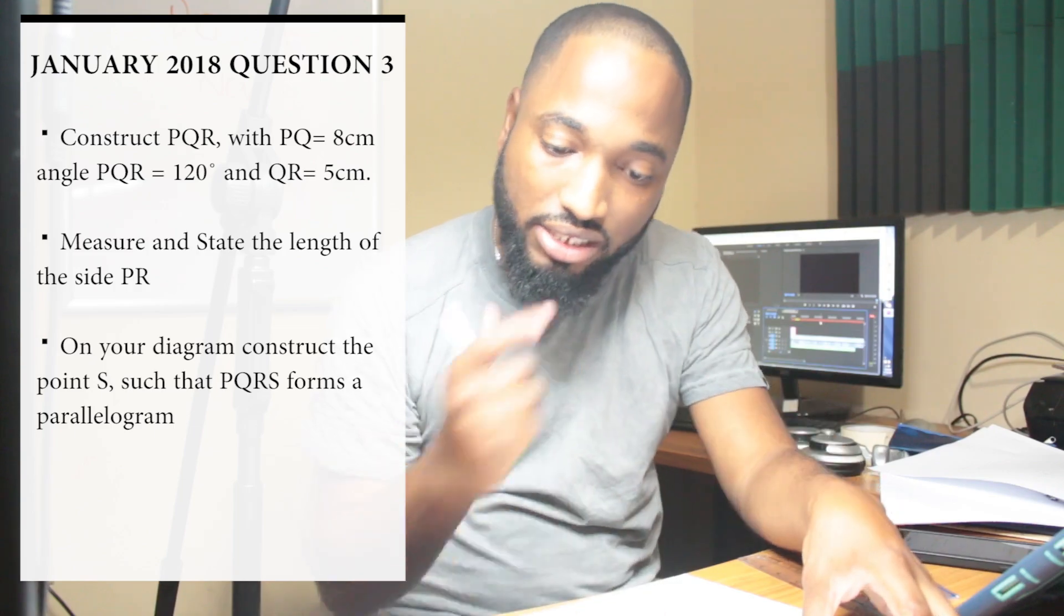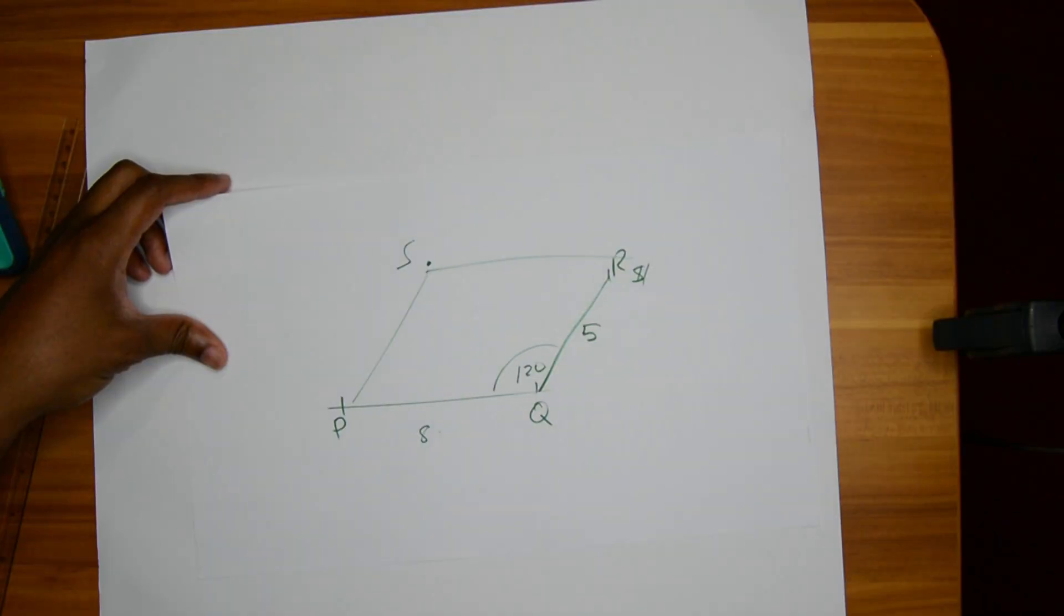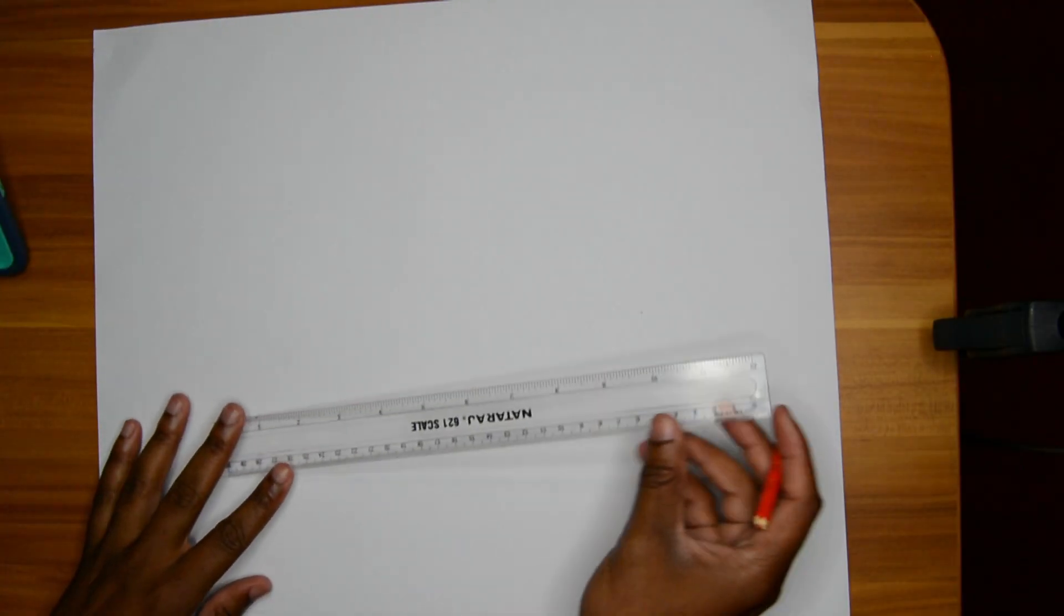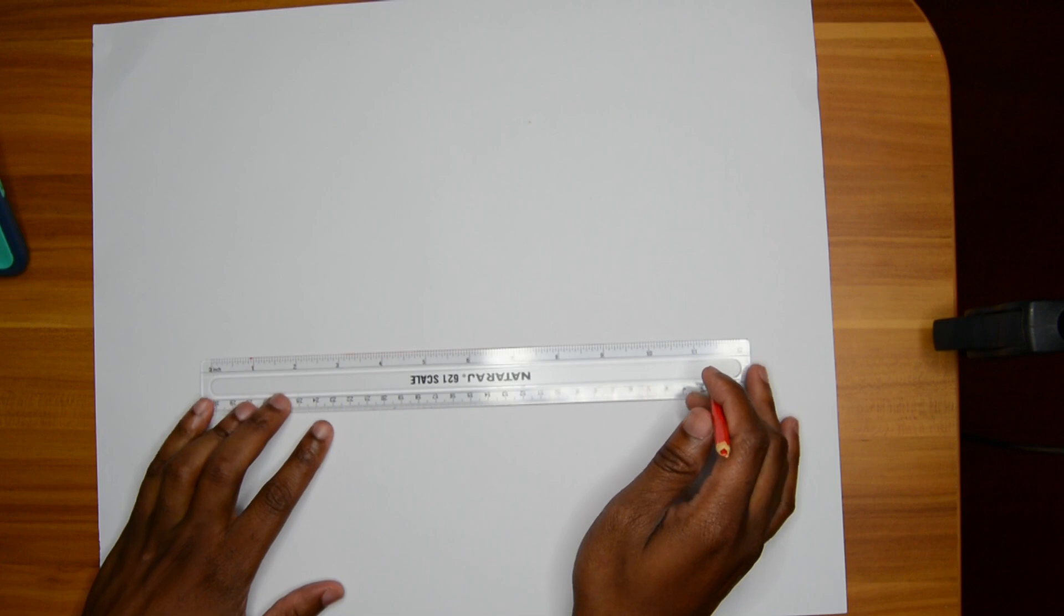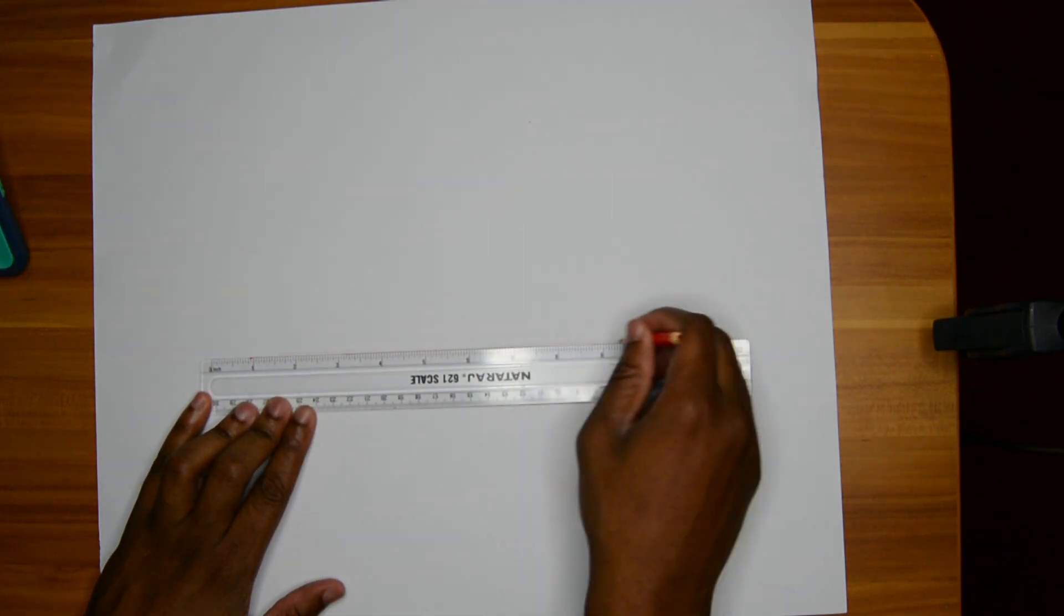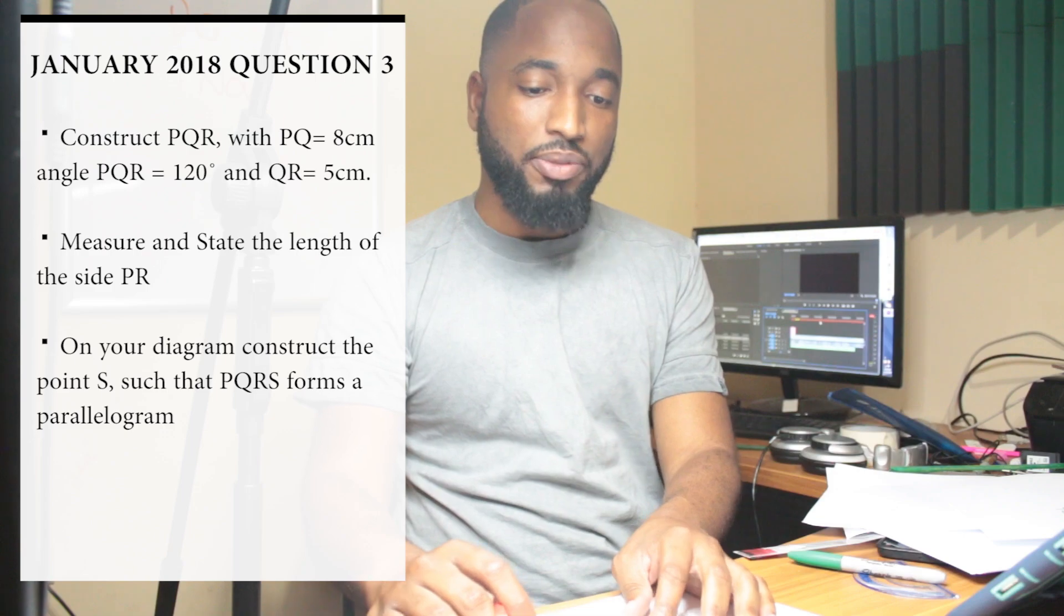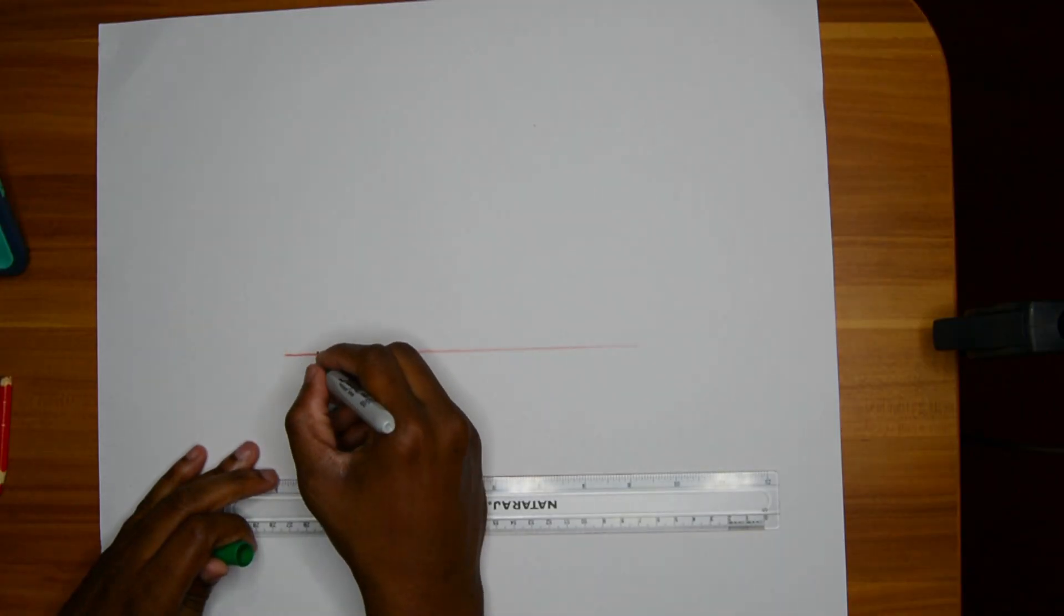PQRS sketch finished, time to put on the real thing. First thing you need to do is draw a baseline. That baseline looking good there. Next up you need to select a point, we'll call that P.